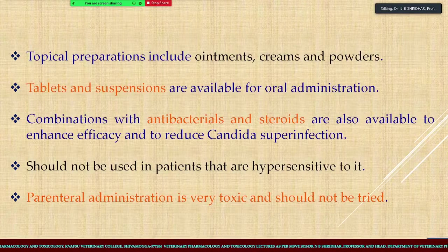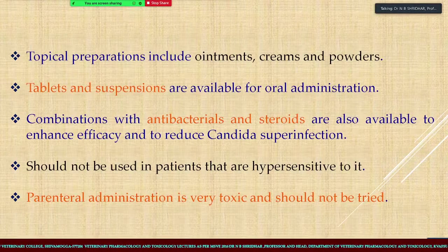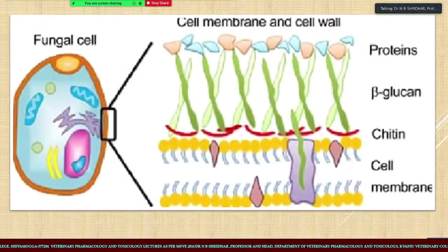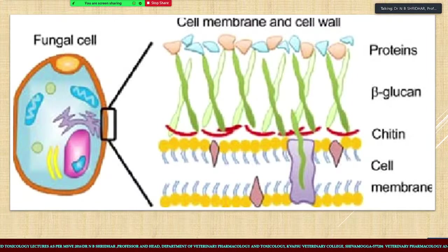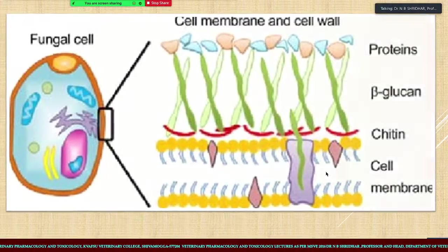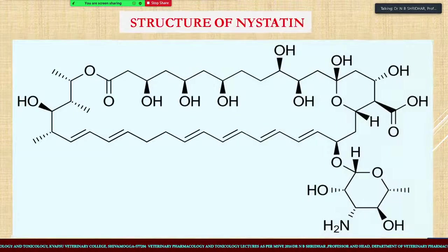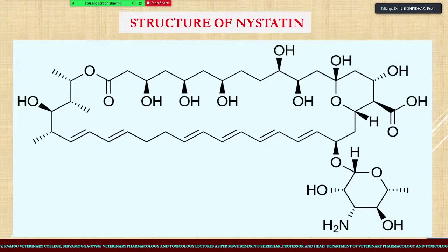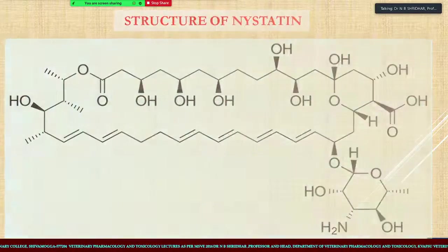The fungal cell contains all structures similar to the host or mammalian cell: cell membrane, cell wall with outer proteins, beta-glucan, and chitin molecules. The structure of nystatin is very similar to that of Amphotericin B. It is expressed in units - available in tablets of 10,000 or 1,00,000 units. The dose is 50,000 to 1,50,000 units; for cats it is 1,00,000 units total. It is also used for crop mycosis and mycotic diarrhea in birds at 50 to 100 grams per ton of feed for 7 to 10 days.